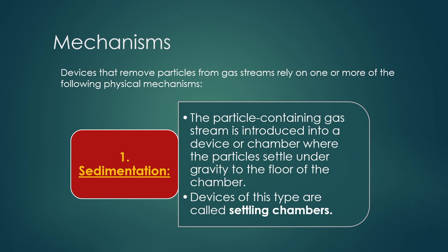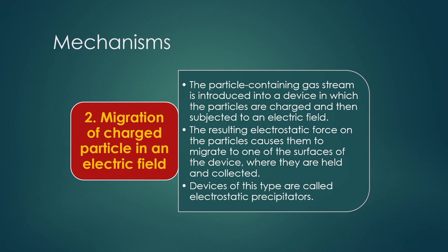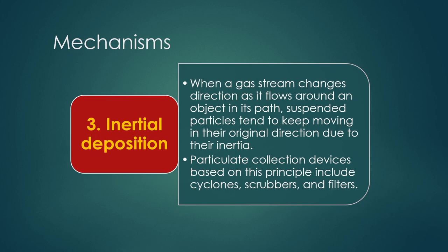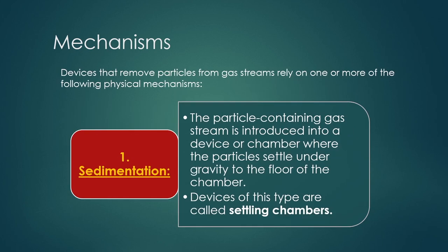One mechanism is sedimentation; another is electrostatic precipitator; another is membrane separator; another is called a bag filter or leaf filter process; and there is also a magnetic induction precipitator. The four main mechanisms are: sedimentation, migration of charged particles in an electric field, inertial deposition, and Brownian diffusion.